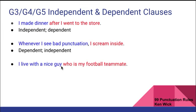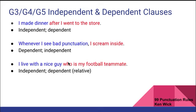Next example: 'I live with a nice guy who is my football teammate.' The first clause, 'I live with a nice guy,' has a subject and verb and does not begin with a subordinating conjunction, therefore it is an independent clause. 'Who is my football teammate' begins with a relative pronoun, which acts as a subordinating conjunction, therefore it is a dependent clause — specifically a relative dependent clause.